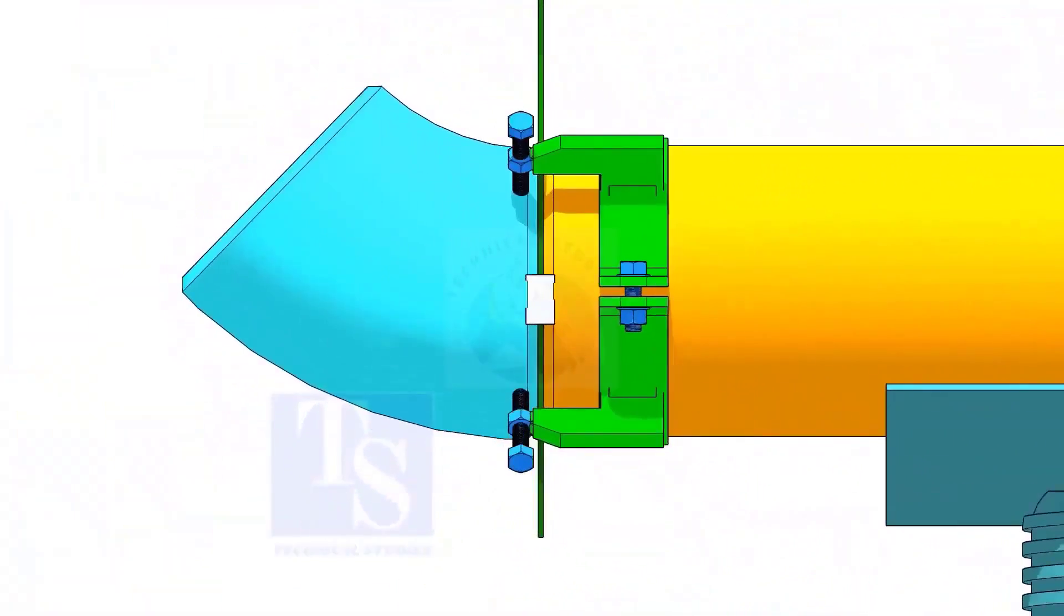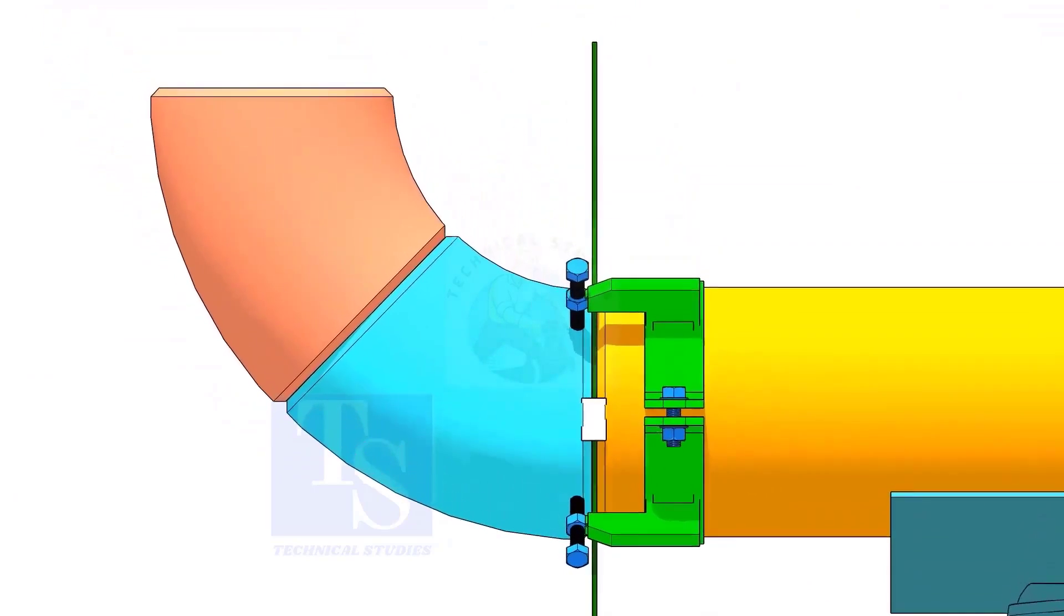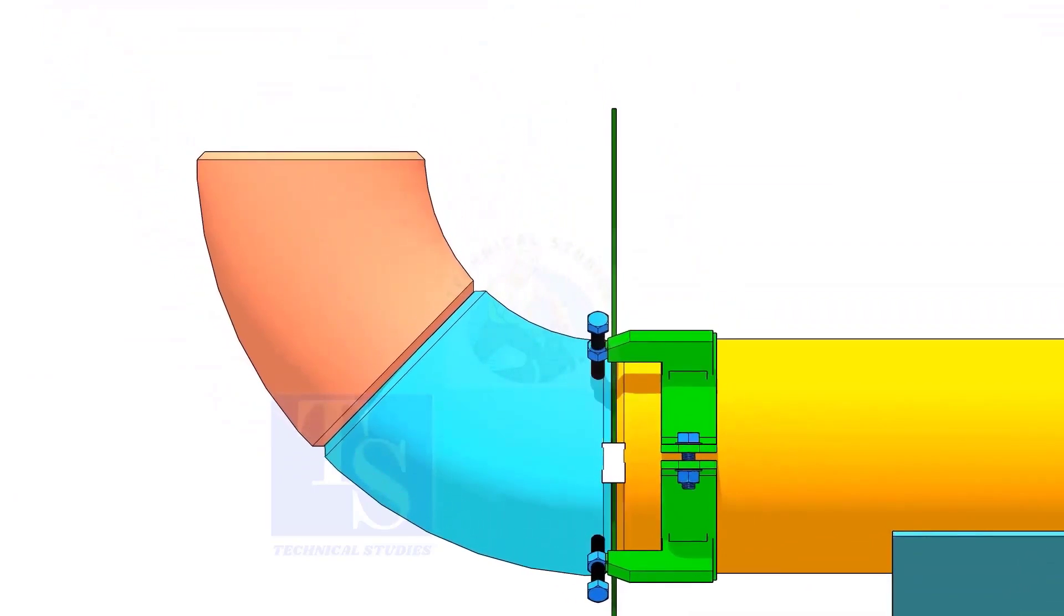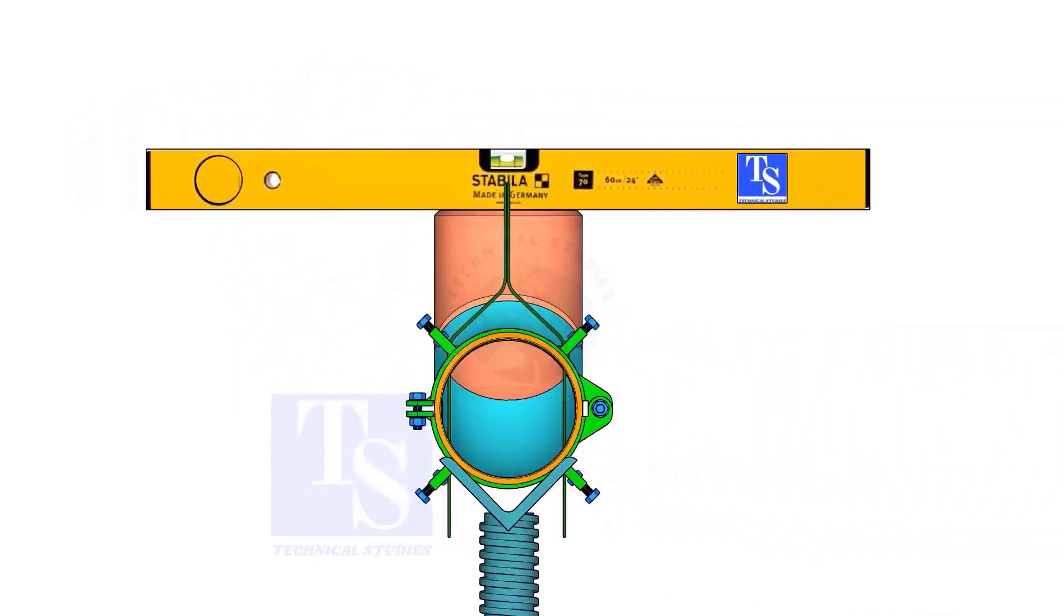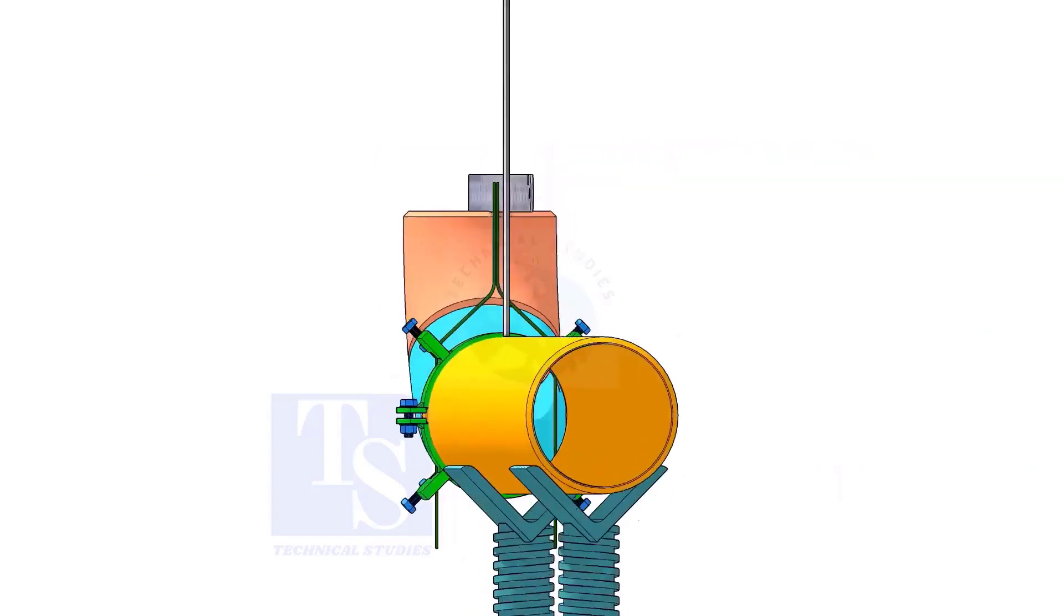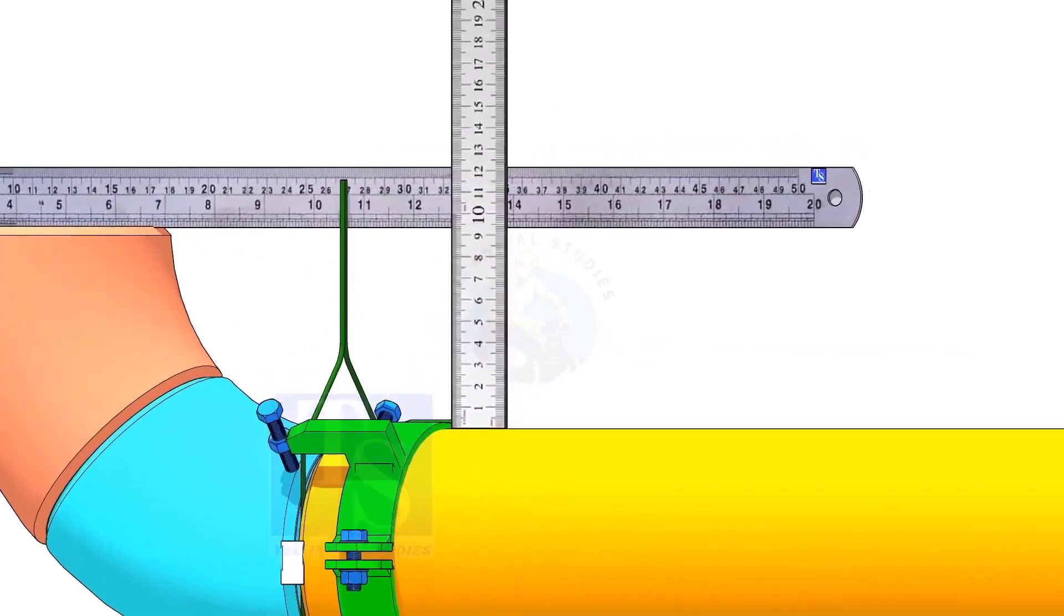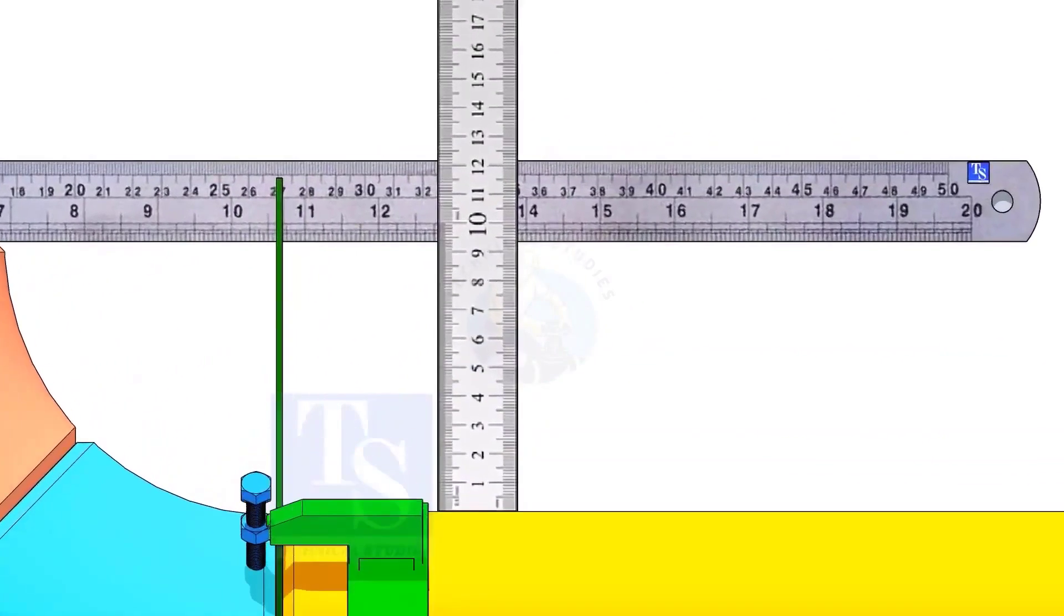Hold another elbow of 45 degree on the top of this elbow. Level this elbow horizontally. Measure the distance, as shown, if correct,